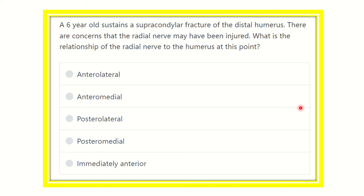Welcome to another video for the MRCS exam — this is the question and answer session. A six-year-old sustains a supracondylar fracture of the distal humerus. There is concern that the radial nerve has been injured. What is the relationship of the radial nerve to the humerus at this point?